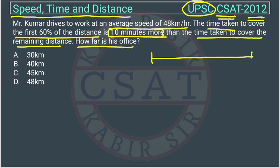Suppose we draw a line - this is the office and this is home. Mr. Kumar is going from home to office at a speed of 48 km per hour. Suppose the distance is D from here till here.